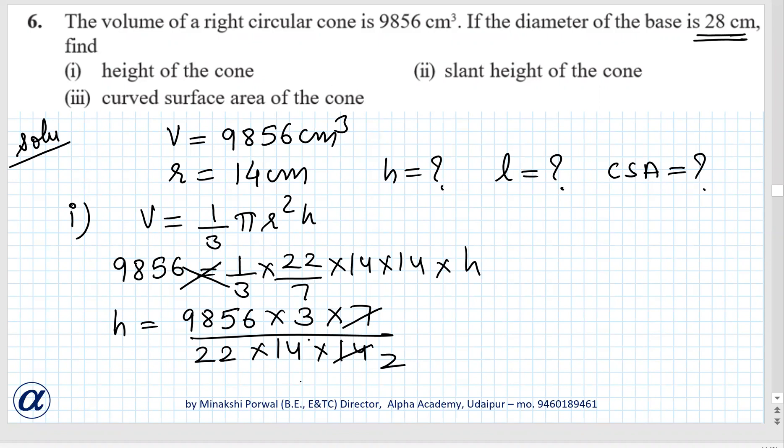So 7 2s, then we will cut it from 7 to 7. 28 4 times, 0 7 8 56. Again cutting it, so it is divisible. Basically 1408 into 3 upon 22 into 2 into 2.